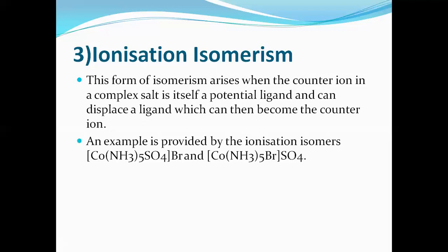For example, pentaaminosulfatocobalt bromide and pentaaminobromidocobalt sulfate. In the first, bromide is the counter ion and sulfate is the ligand. In the second, bromide is the ligand and sulfate is the counter ion. When added to water, the first complex dissociates to give the complex ion plus bromide ion, while the other dissociates to give the complex ion plus sulfate. Two complexes with the same molecular formula give different ions — hence these are called ionization isomers and the phenomenon is ionization isomerism.